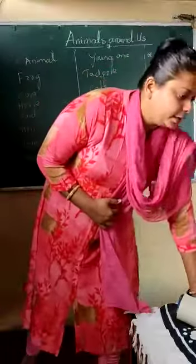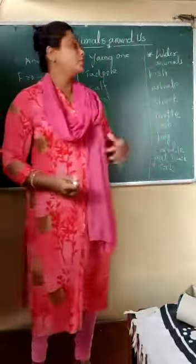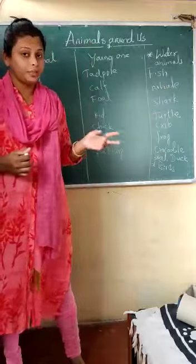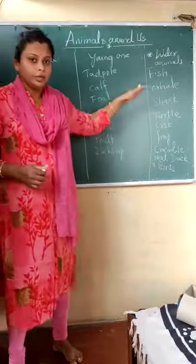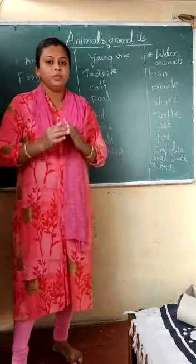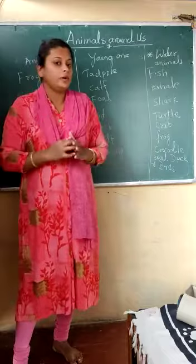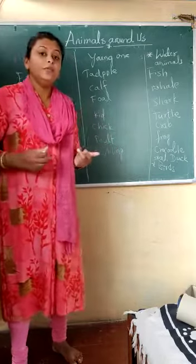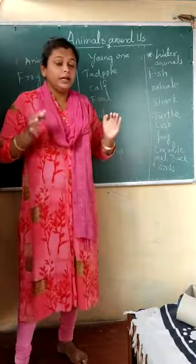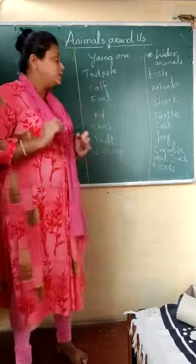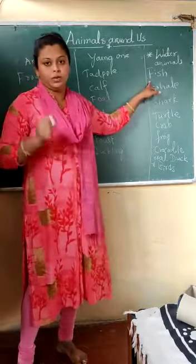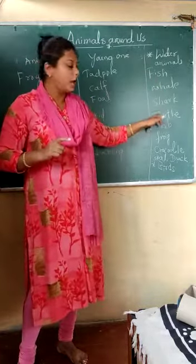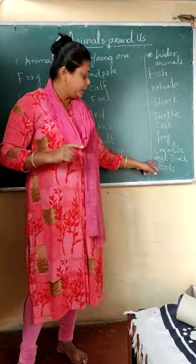Hi children, welcome back again. In the last video we stopped at water animals, where we discussed two types of animals: domestic animals and wild animals. Today we are going to continue with water animals. Water animals are those animals which live under the water and around the water. These animals are also called aquatic animals. For example, fish, whale, shark, turtle, crab, frog, crocodile, and sea duck.